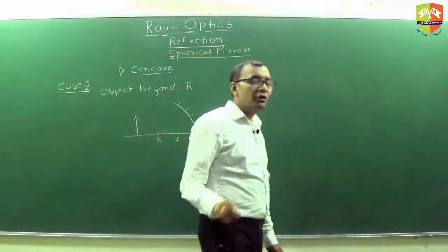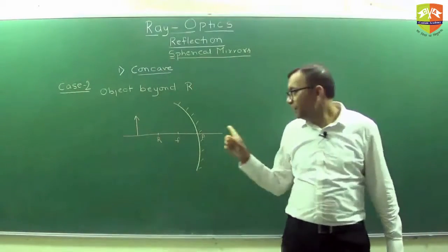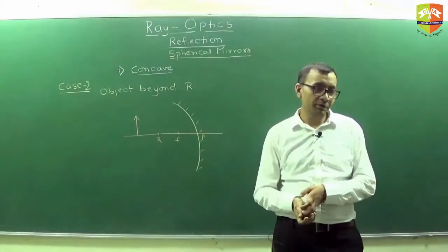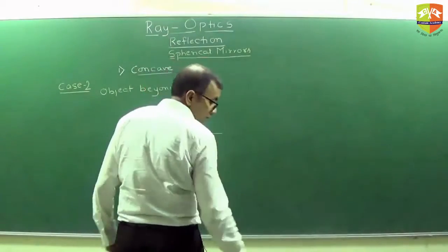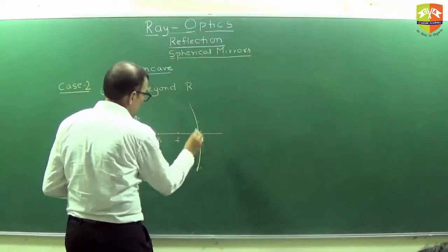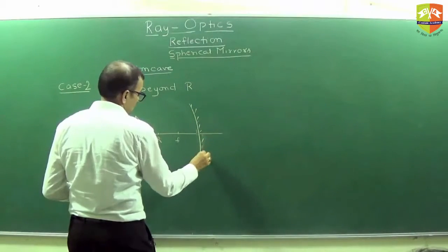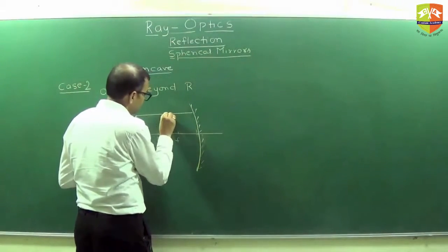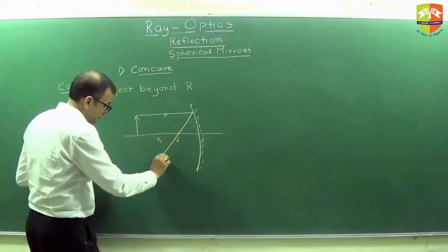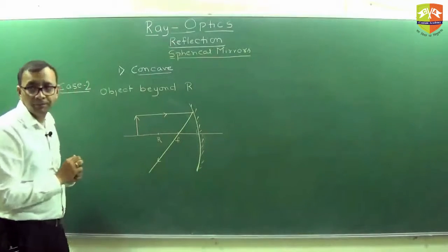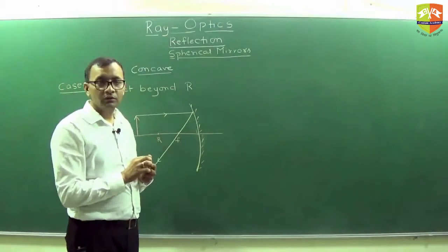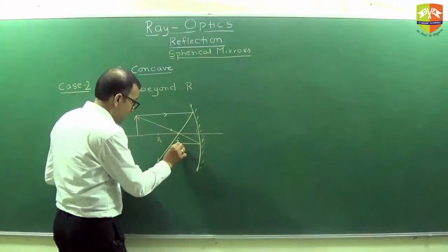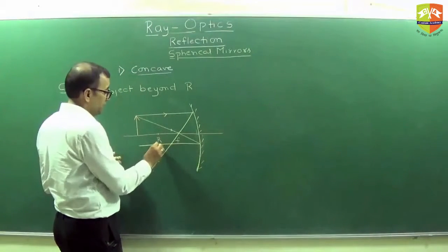Draw a ray diagram. Whenever you show focus, radius should be equidistant, right. Focus should be between R and P so that your ray diagrams are proper. One ray goes like this. What will happen to this ray? Passes through focus. Then what? Which other ray you can draw? Through the focus. Draw this ray. It will be parallel. So you got the intersection point.